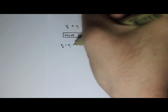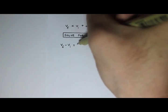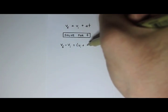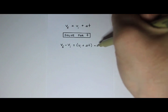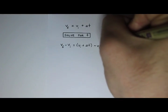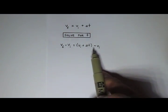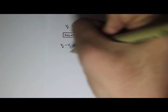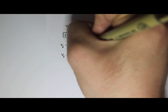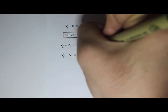So v final minus v initial equals, and then I have v initial plus a t minus v initial, so I'm subtracting it from both sides. And v initial minus v initial, that goes away, so I'm just left with a t on this side. So I have v final minus v initial equals a t.